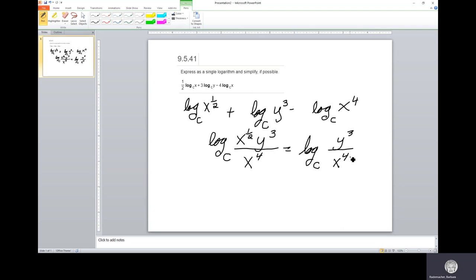X to the fourth minus one-half is three-and-a-half, which is seven-halves. So our final answer should be log base C y to the third over x to the seven-halves.